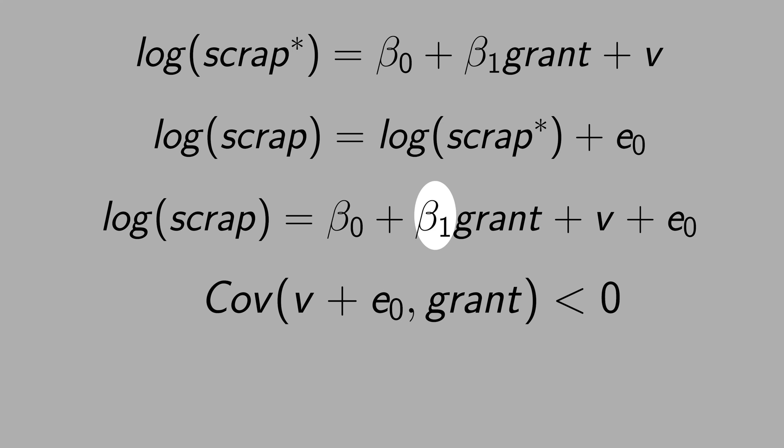The consequence is that this beta 1 here would be biased. This beta 1 will be downward biased. The training program will look more effective than it actually was. The problem is that this measurement error is not random. The firms that receive grants might on purpose under-report scrap. They might want to convince the government that the grant is working. They might want to receive the grant next year.